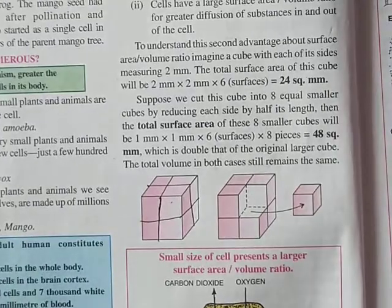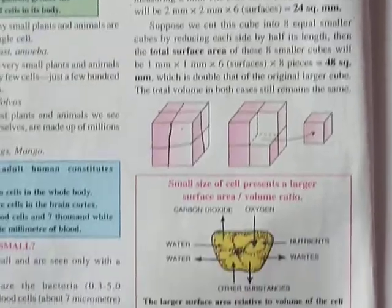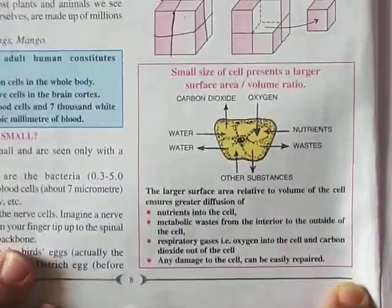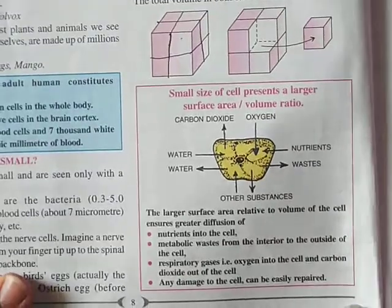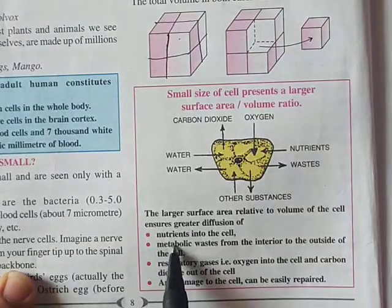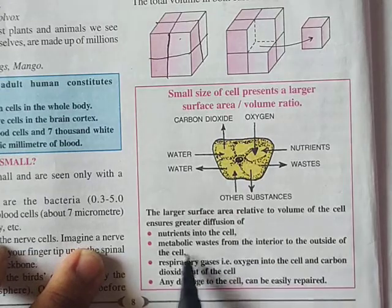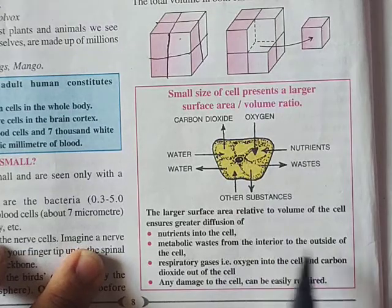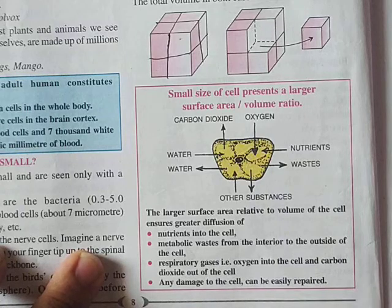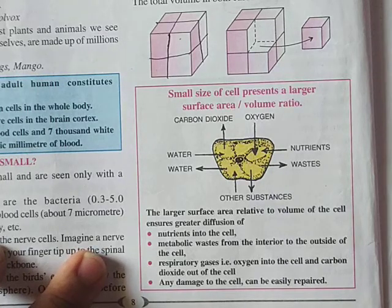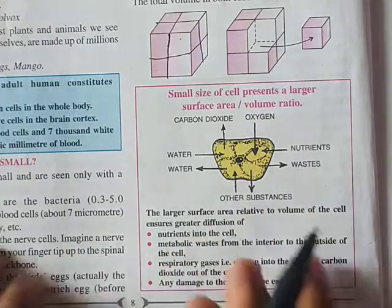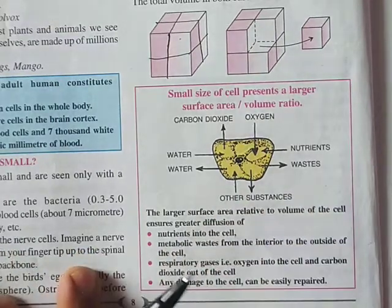If the cell is small, nutrients into the cell can be easily diffused, metabolic waste from the cell can be easily removed, respiratory gas exchange will be easily done — oxygen will be taken in and carbon dioxide given out — and any damage to the cell can be easily repaired. For all these purposes, the size of the cell should be small.